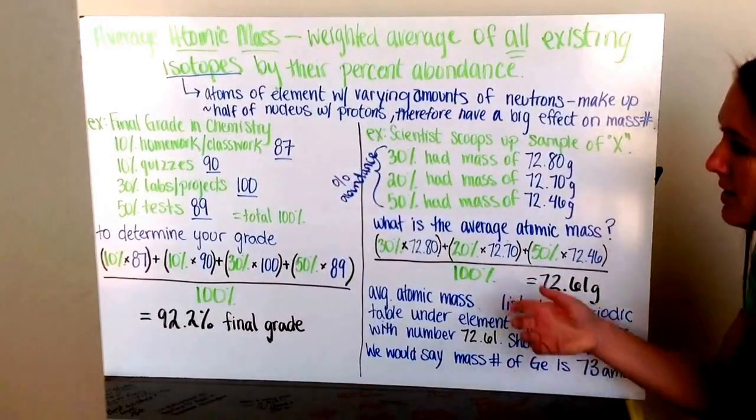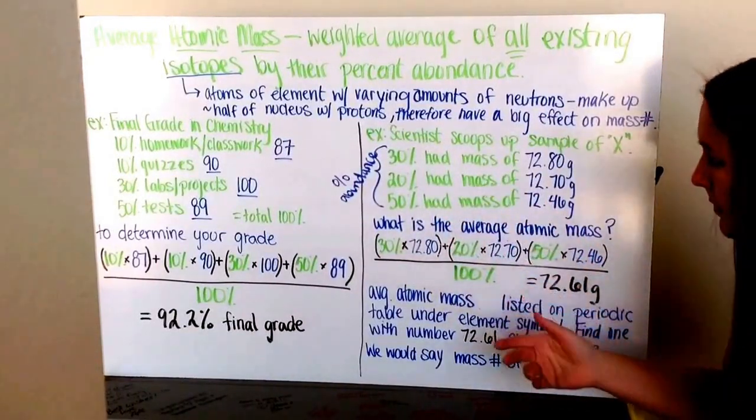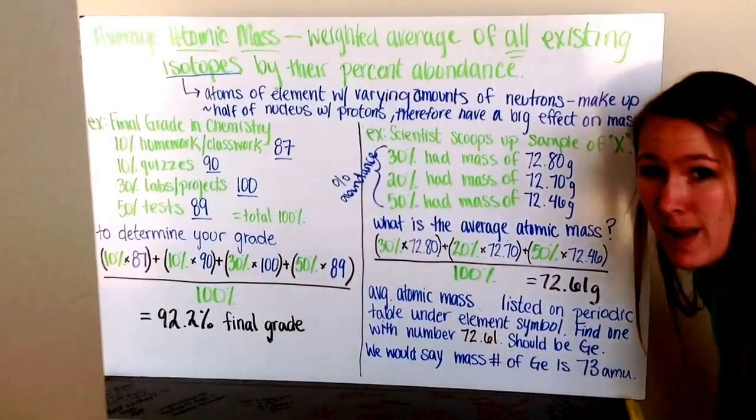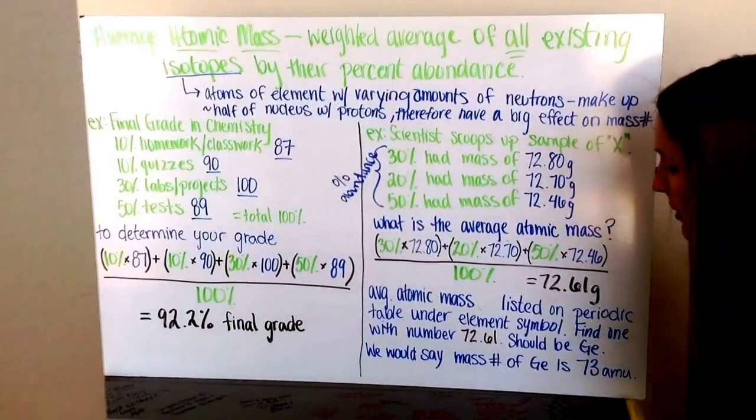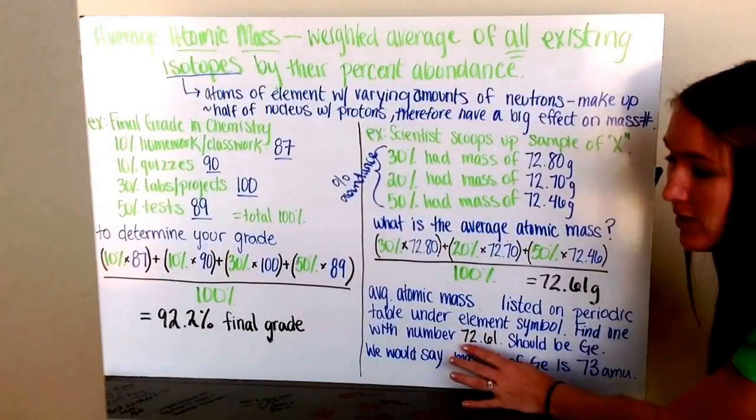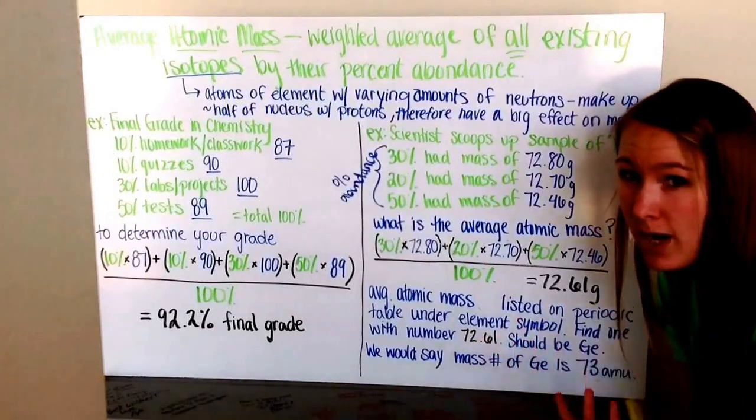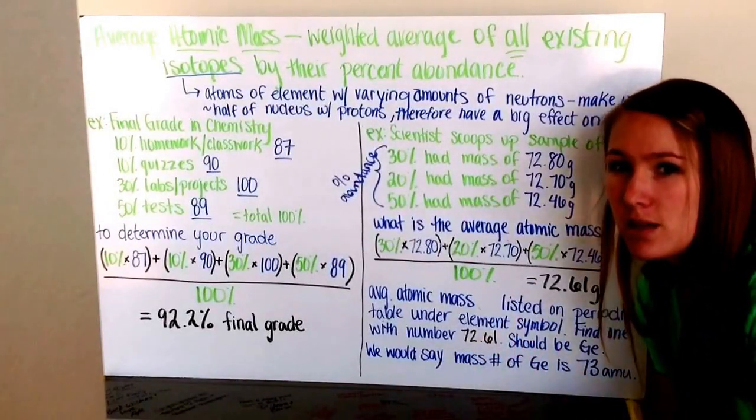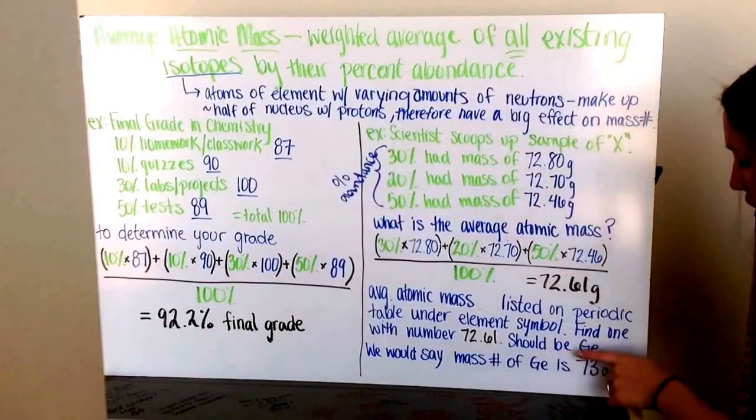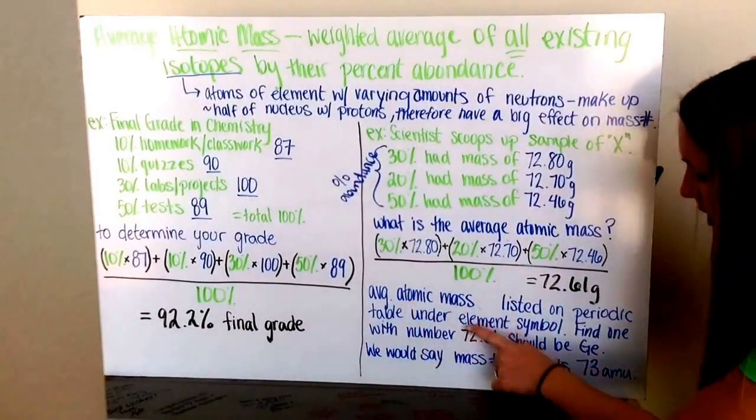On the periodic table, you have the elemental symbol, and underneath is the average atomic mass for that element. Looking for which element has an average atomic mass of 72.61, you'll find that it's germanium, or Ge.